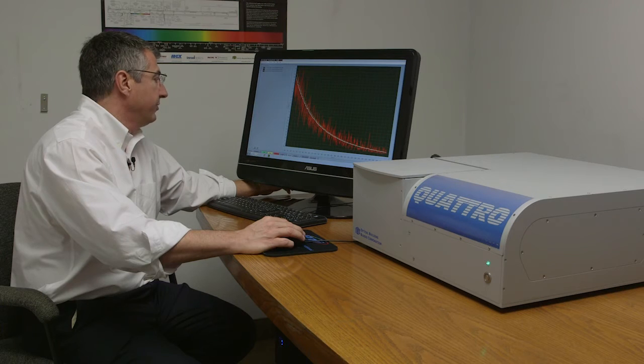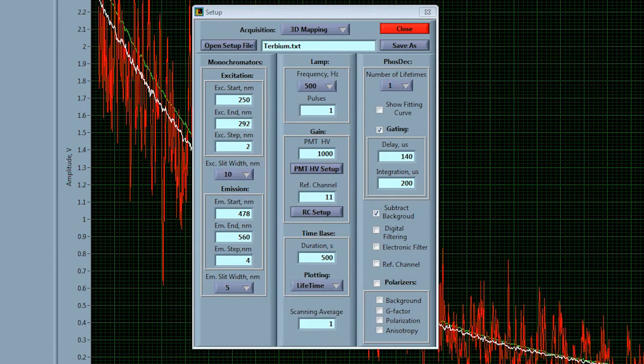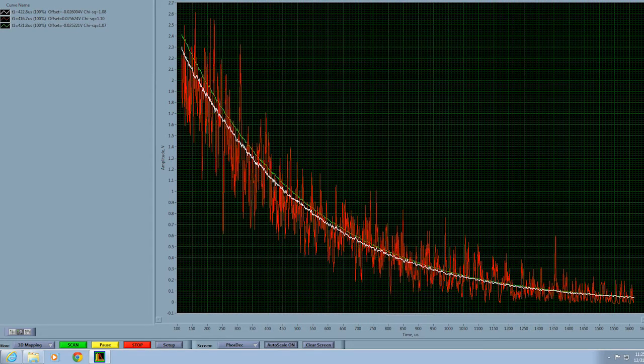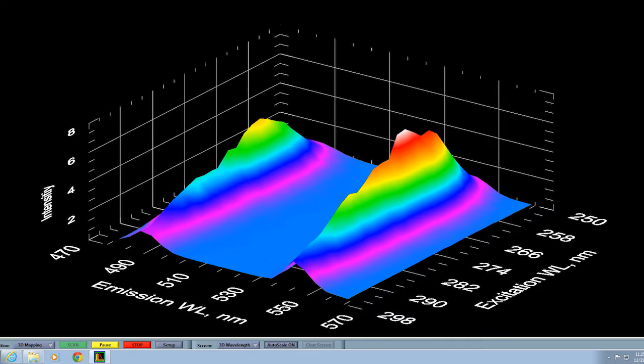In order to do that we simply go again to the setup panel, adjust the wavelength range across which we want to scan the excitation and the emission monochromators, make a few other adjustments to the detection parameters, and then go to the acquisition selection panel. We're going to do a 3D mapping this time and we're just going to hit scan.